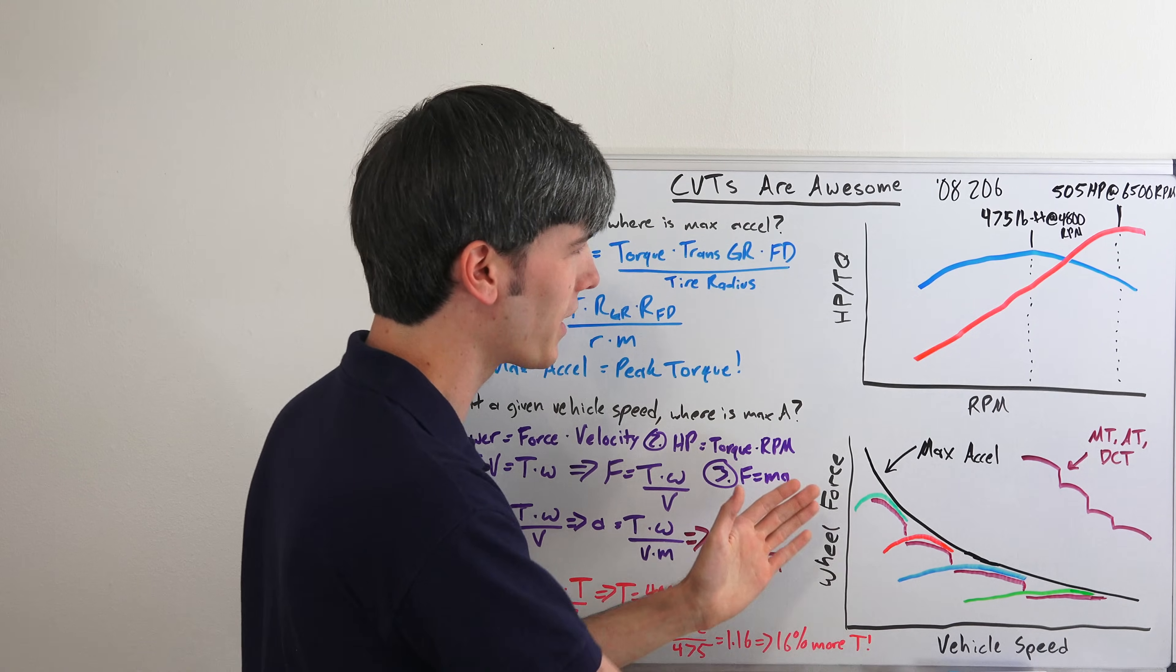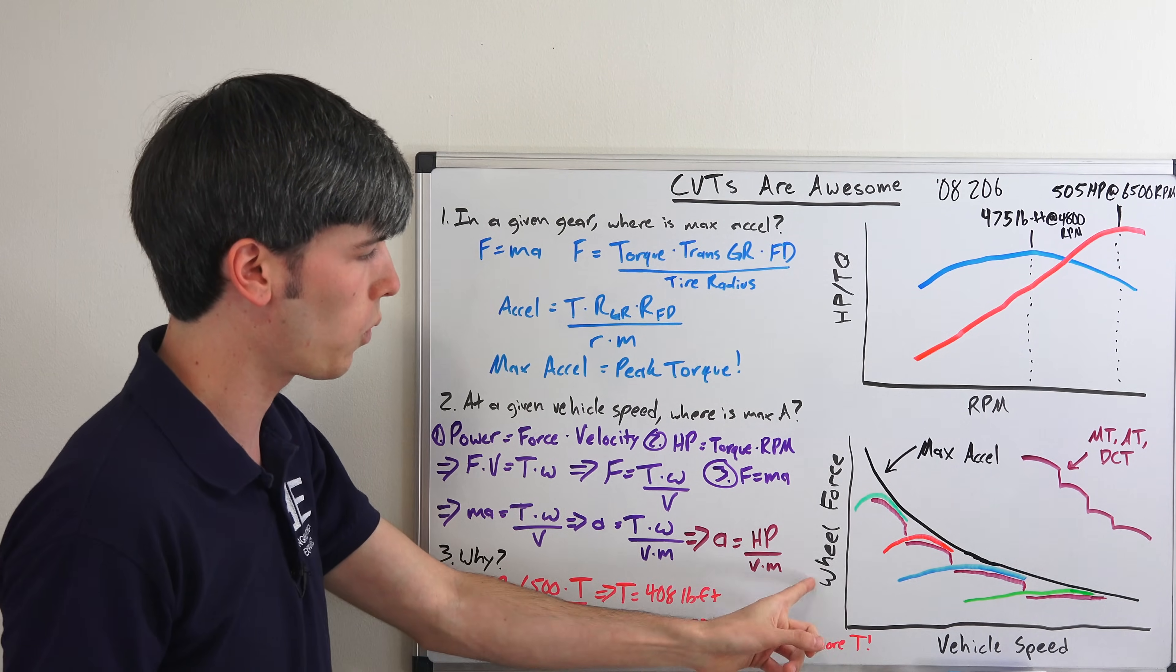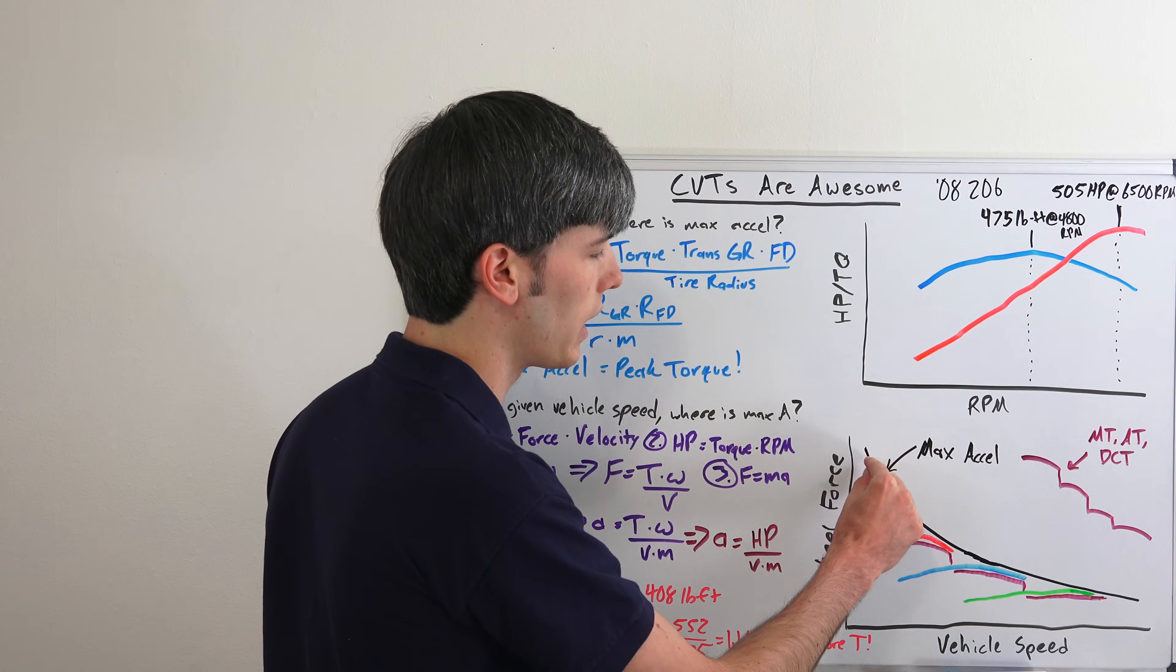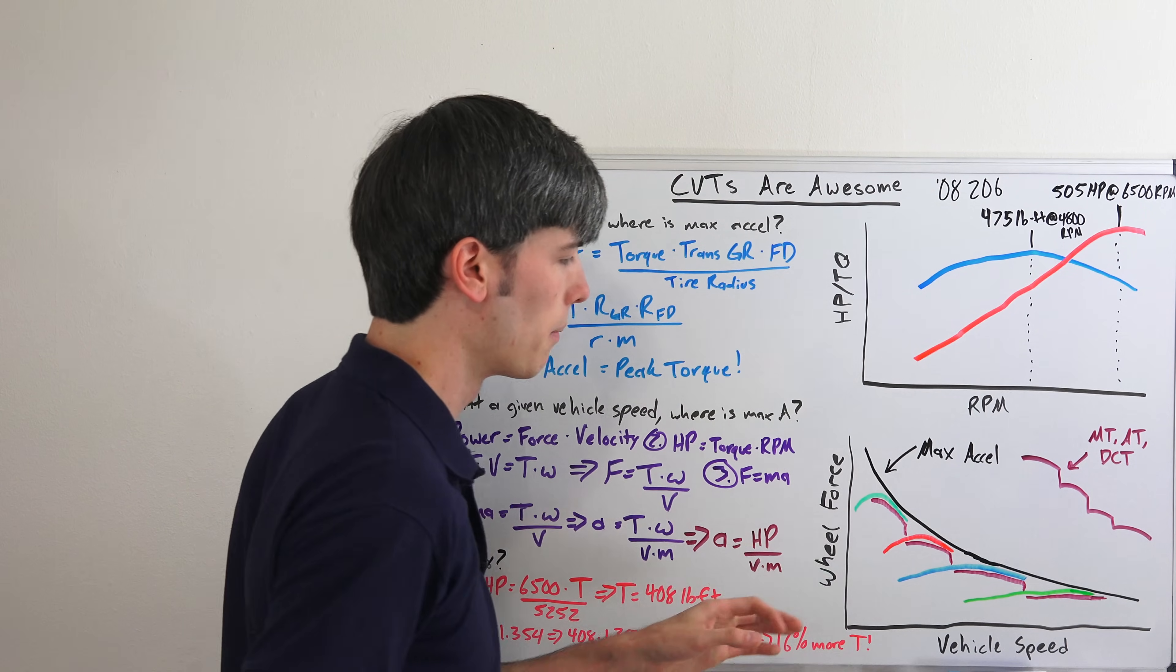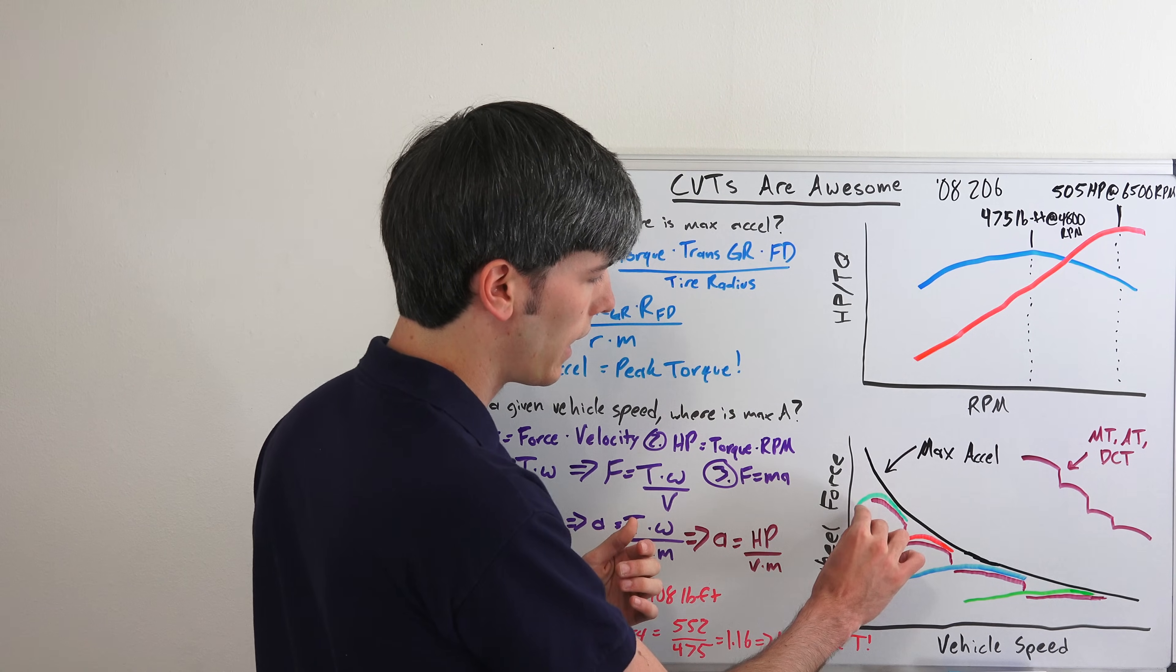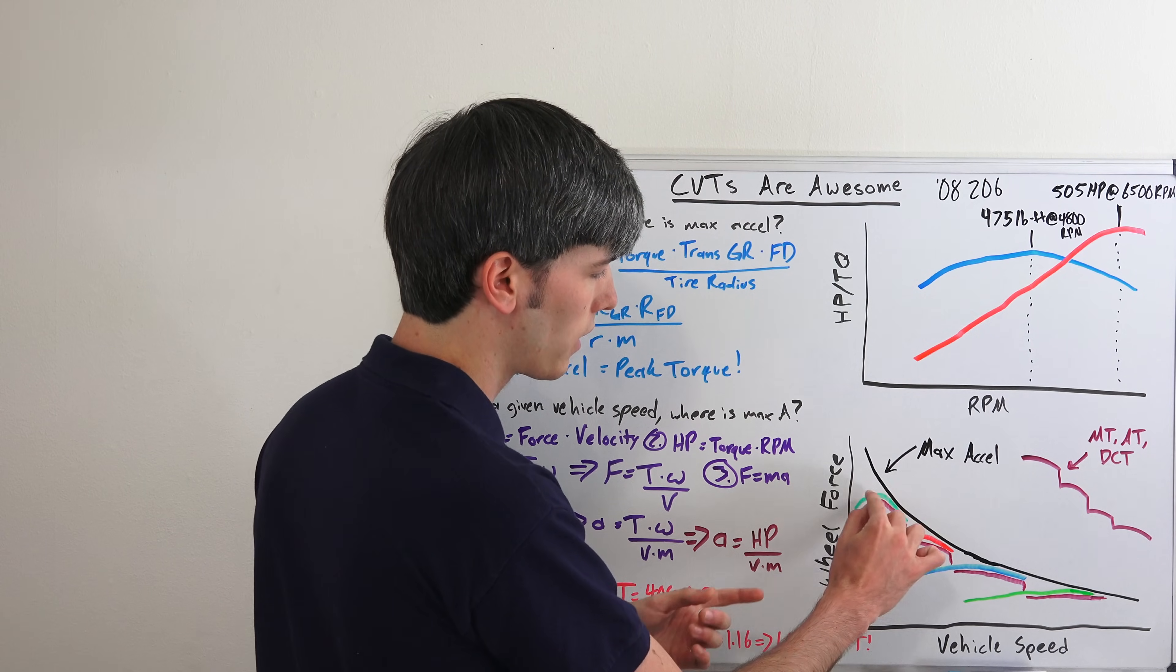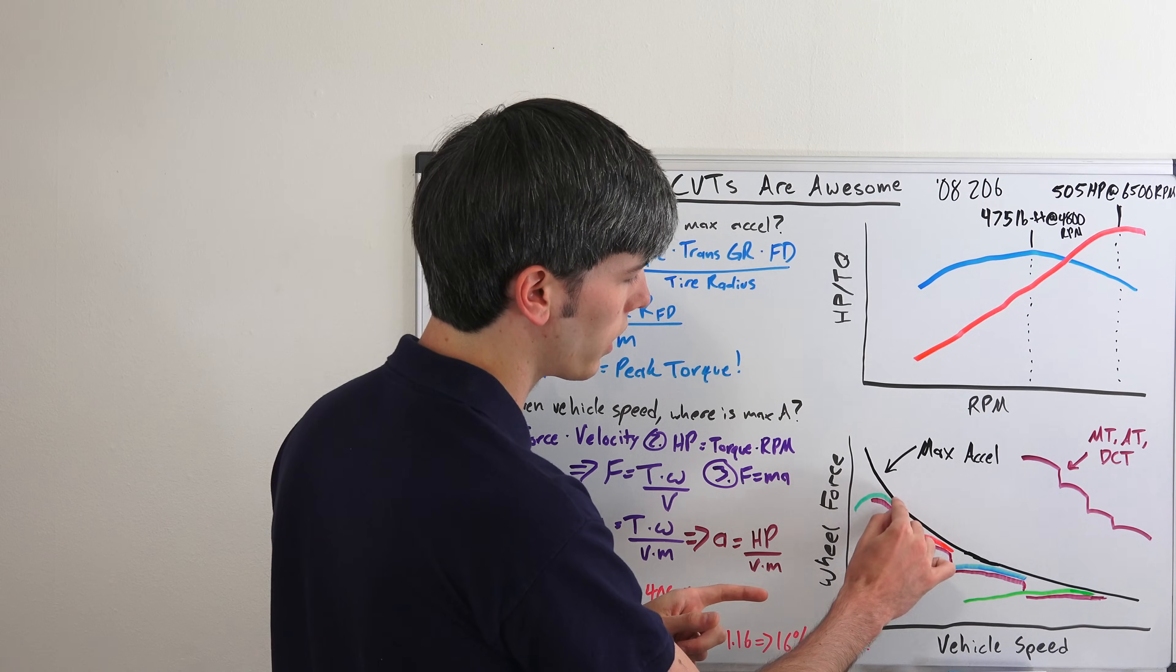So where we're putting this all together and getting back to the reason why CVTs are awesome is looking at wheel force versus vehicle speed. Maximum acceleration would be if we were to just follow peak horsepower and change the gear ratio accordingly. But because we're in this Corvette which has a six-speed transmission or whatever it has, you're gonna have this - here's gonna be your first gear right there. That's what your force at the wheels is gonna look like - you'll hit peak torque and then it'll start to taper down, but you'll get into peak power so you'll follow that curve as you're getting into those higher RPMs, and then you go into second gear.